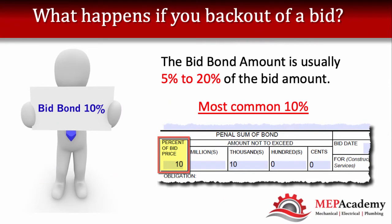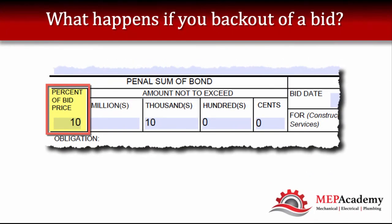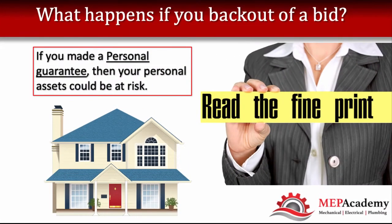Bid bonds are usually in the range of ten percent but can vary depending on the contracting authority. The bid bond percentage will be indicated in the bid documents. To reiterate, if you back out and you made a personal guarantee, then your personal assets could be at risk. You want to read the fine print and have the bond company explain to you the terms and conditions of the bond.